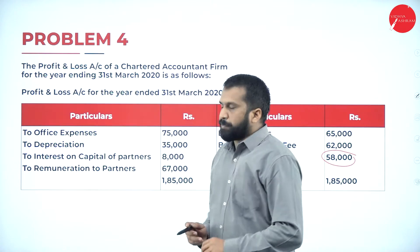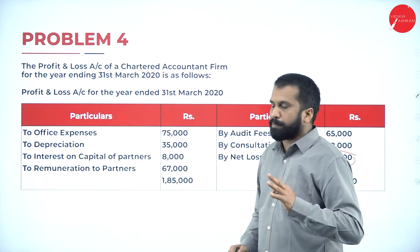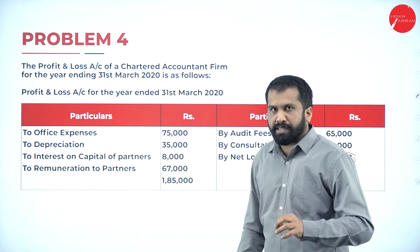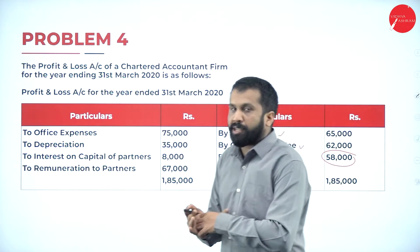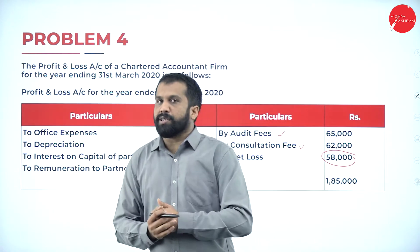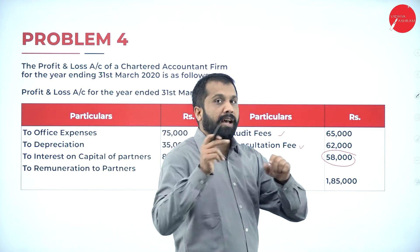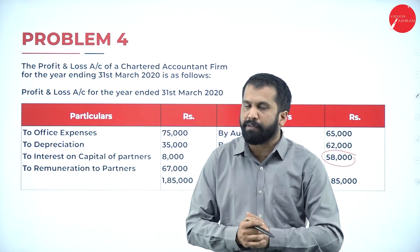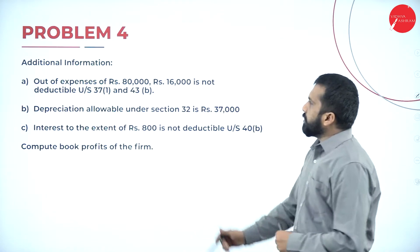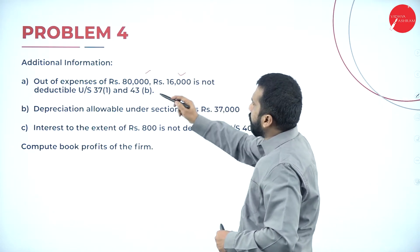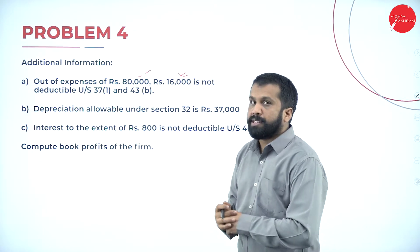Office expenses are part of the business. Depreciation is not directly related to business. Interest on capital you are supposed to take. Remuneration to partners, yes you are supposed to take. Audit fees are part of the business, consultation is part of the business. Items which are not directly involved in the business we are supposed to add. As per the adjustments: out of expenses 80,000, 16,000 is not deductible under section 37 subsection 1.